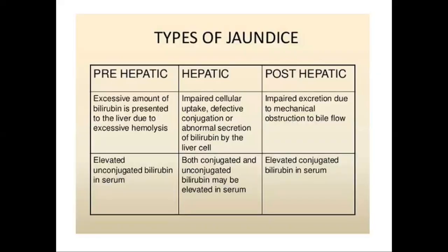There are three types of jaundice: prehepatic, hepatic, and posthepatic. Hepatic is also called hepatocellular jaundice, and posthepatic is also called obstructive jaundice.